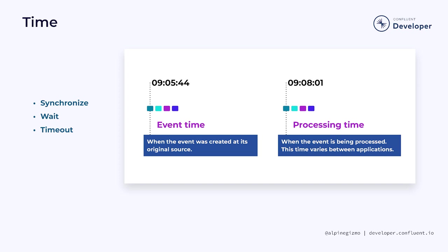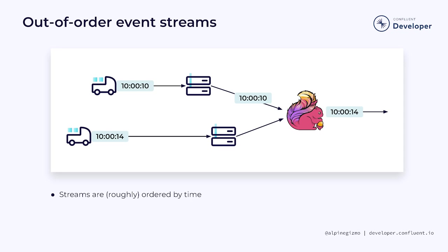As an event is being processed, these two different notions of time are relevant. Event time is the time when the event was originally created or recorded, while processing time is the time later on when the event is being processed. Event time is generally preferred because it is consistent and working with it should produce deterministic results. But processing time can be simpler to work with, and so it is sometimes chosen for that reason.